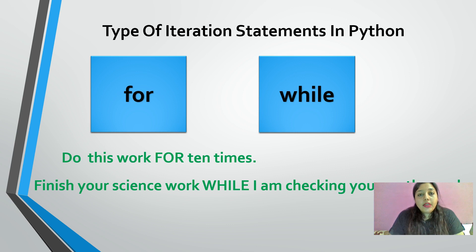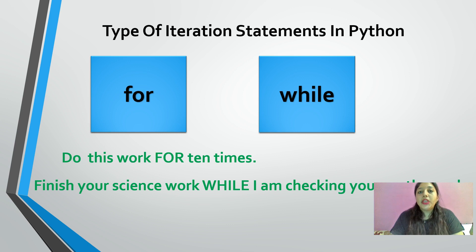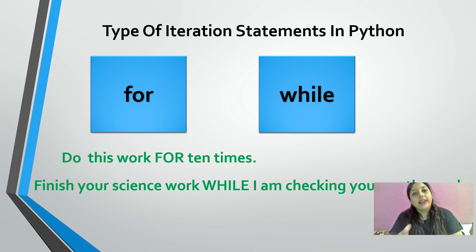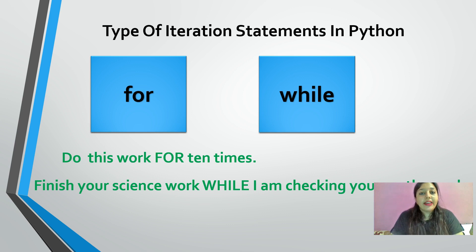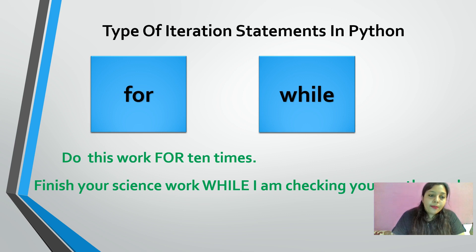Suppose someone is asking you to do a task for 10 times — that person is deciding that you have to repeat this task 10 times. So with the for loop, the number of iterations or number of repetitions is known beforehand.